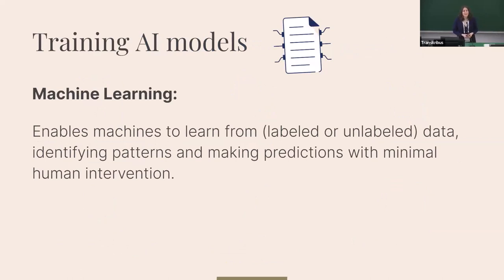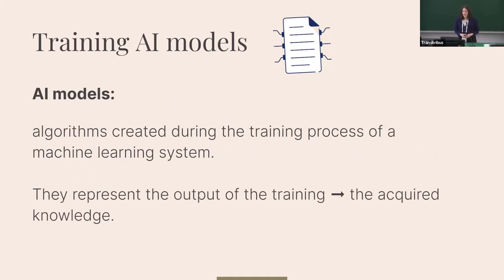Just to quickly touch on AI and machine learning: machine learning enables computers to learn from either labeled or unlabeled data, identifies patterns, and makes predictions with the least human intervention possible. The AI models we always talk about are the results — they are algorithms created during the training process and represent the acquired knowledge of that process.